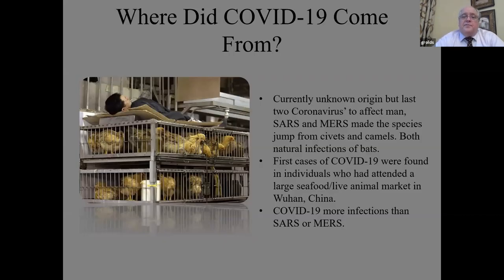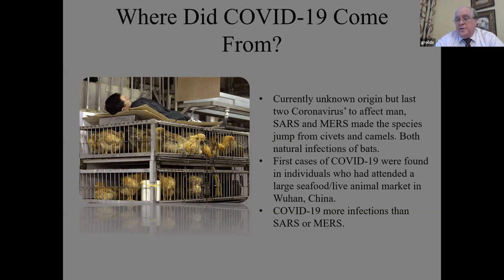Where did COVID-19 come from? We don't know for sure and probably won't know except maybe in retrospect. We know the other two human coronaviruses, SARS and MERS, came from other species. The first cases of COVID-19 were found in individuals who had epidemiologically attended a large seafood and live animal market in Wuhan, China, strongly suggesting that an animal somewhere in that live animal market was sick and transmitted the virus to human beings, who subsequently transmitted it to other humans.